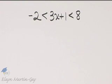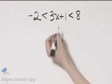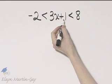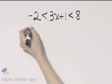Let's solve this compound inequality. Remember, for this we want x by itself in the middle, so I'll begin by subtracting 1 from all three parts.